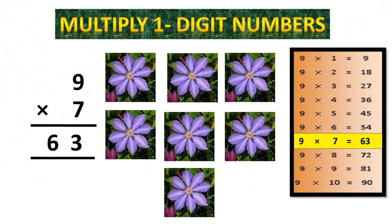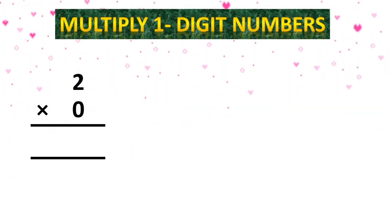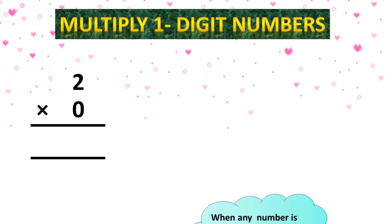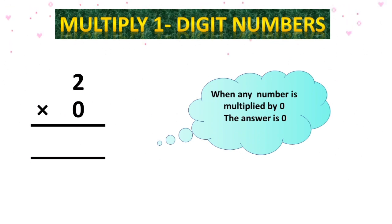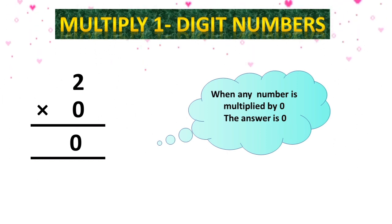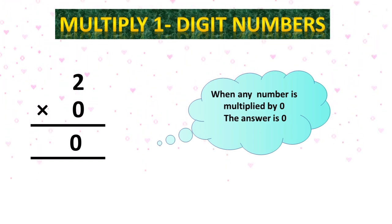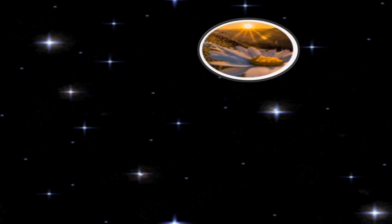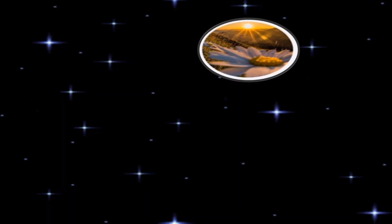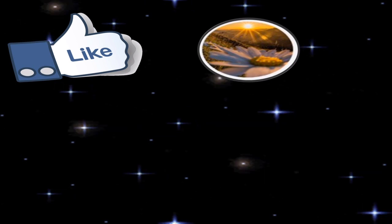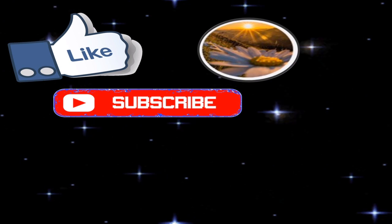Beta, look here — 2 multiplied by 0. Remember it: when any number is multiplied by 0, the answer is 0. Beta, yaad rakhna hai — jab koi bhi number 0 se multiply hota hai, toh humara answer 0 hota hai. Dear viewers, I hope that you like today's video, so please don't forget to like and subscribe my channel. Thank you, Allah Hafiz.